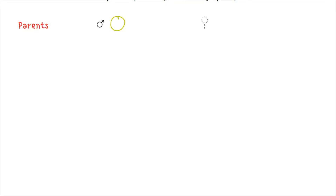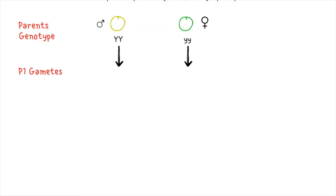We cross a male plant that produces yellow seeds with a female plant that produces green seeds. This is the genotype of both plants. When these plants produce gametes, the pair of alleles gets separated during gamete formation, so they produce gametes each with a single copy of that pair of alleles.